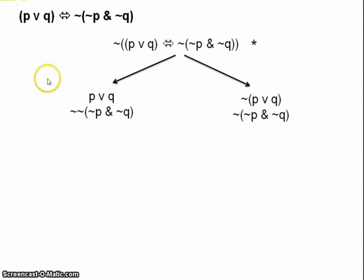Okay, so let's focus on the left branch here. Well, we can easily apply double negation, as you can see, to not P and not Q.